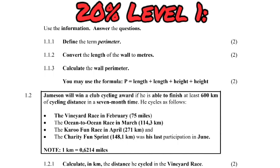The 20 Level 1 questions in Paper 2 are the type you need to study for — conversions, and topics heavily focused on measurement. For example, Question 1.1 asks you to define the term 'perimeter.' A definition like that becomes a Level 1 question in Paper 2. Converting lengths to meters and using perimeter formulae also fall into these 20 Level 1 questions.